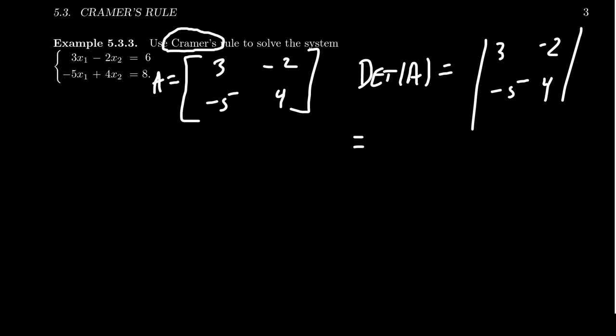Multiplying the diagonals: 3 times 4 is 12, and then -2 times -5 is +10 (a double negative), so we get 12 minus 10, which is 2. This tells us that A is non-singular, and computing this determinant is also the first step we need for Cramer's Rule.